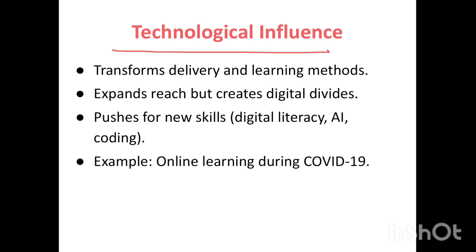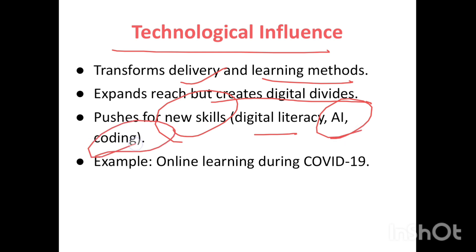Technological influence: Technology transforms delivery and learning methods. It expands reach but also creates digital divides. It pushes for new skills like digital literacy, artificial intelligence, and coding. For example, online learning during COVID-19 is a key example of technological influence on education.